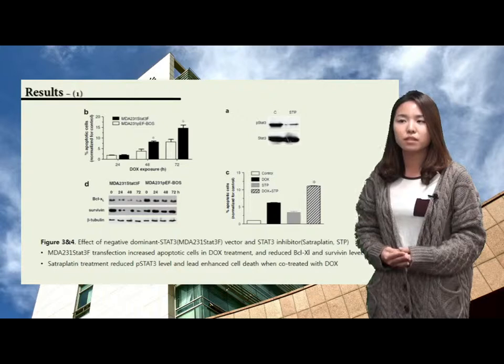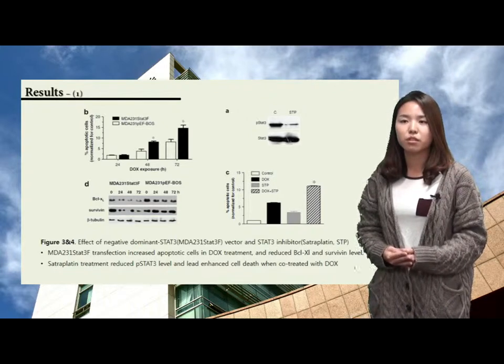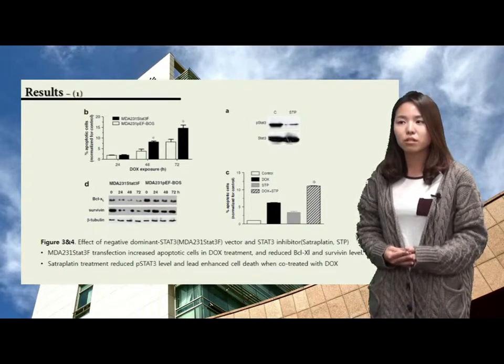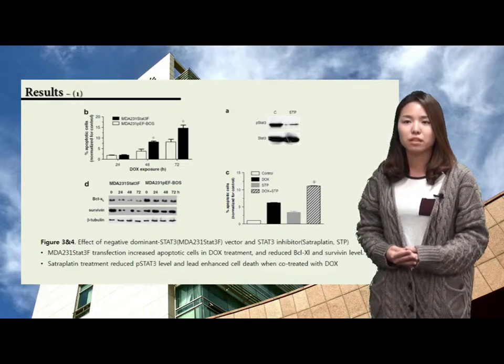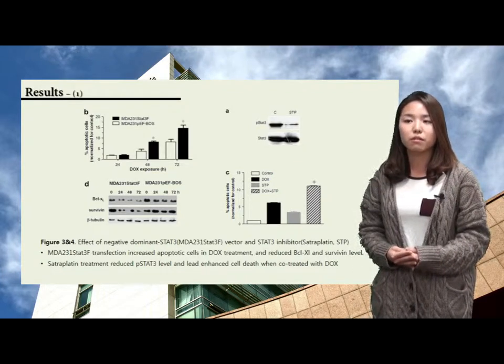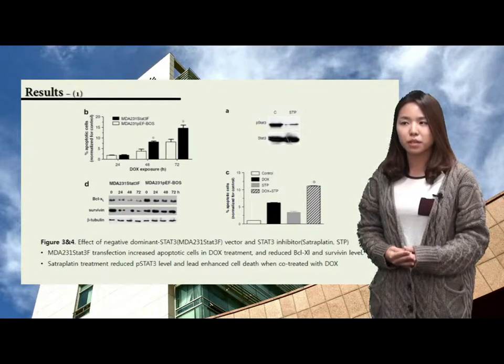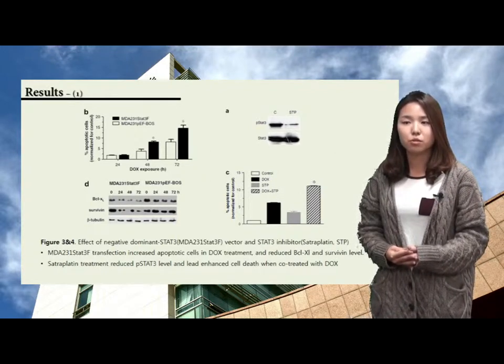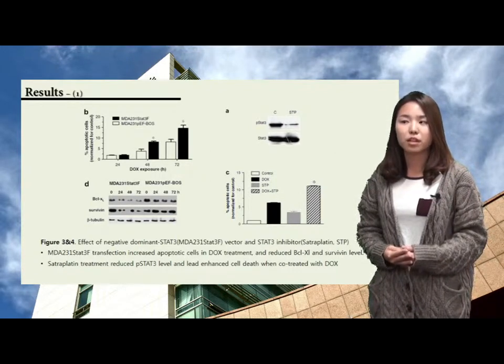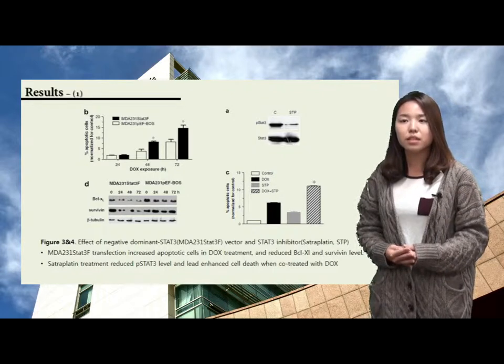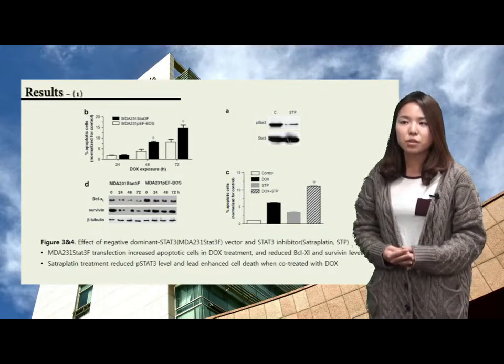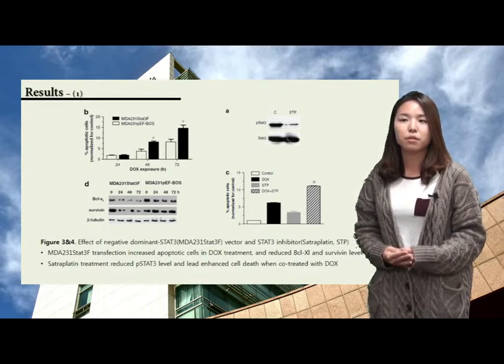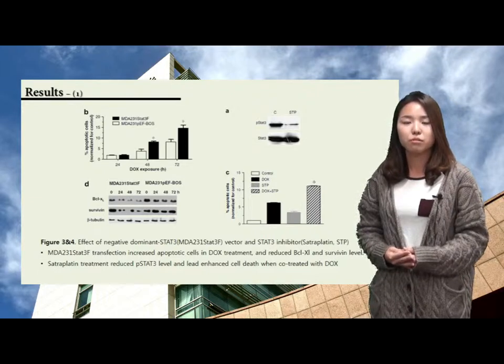Also, the transfected cells with dominant negative STAT3 vector showed reduction of cell survival-related proteins, BCL-XL and survivin. The STAT3 inhibitor treatment also increased the cell deaths of doxorubicin-treated cells, same as JAK inhibitor. Until now, I showed some key results of the first paper, and now I'll introduce the results of the next paper.